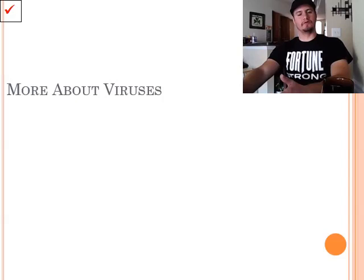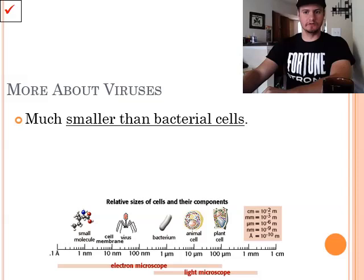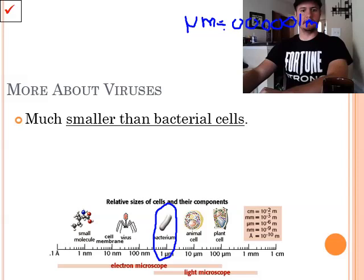Some more info about viruses. Viruses are much smaller than bacterial cells. So what we have here is your normal bacteria, which if you look at the little chart down here, bacteria can be found right here. Now bacteria is about one micrometer. So just for a heads up, micro is about 0.00001 meters. So that is one micrometer.